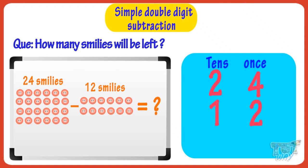Write 12 as 2 is in the ones place digit. So write it below 4. 1 is in the tens place digit. So write it below 2. Good!